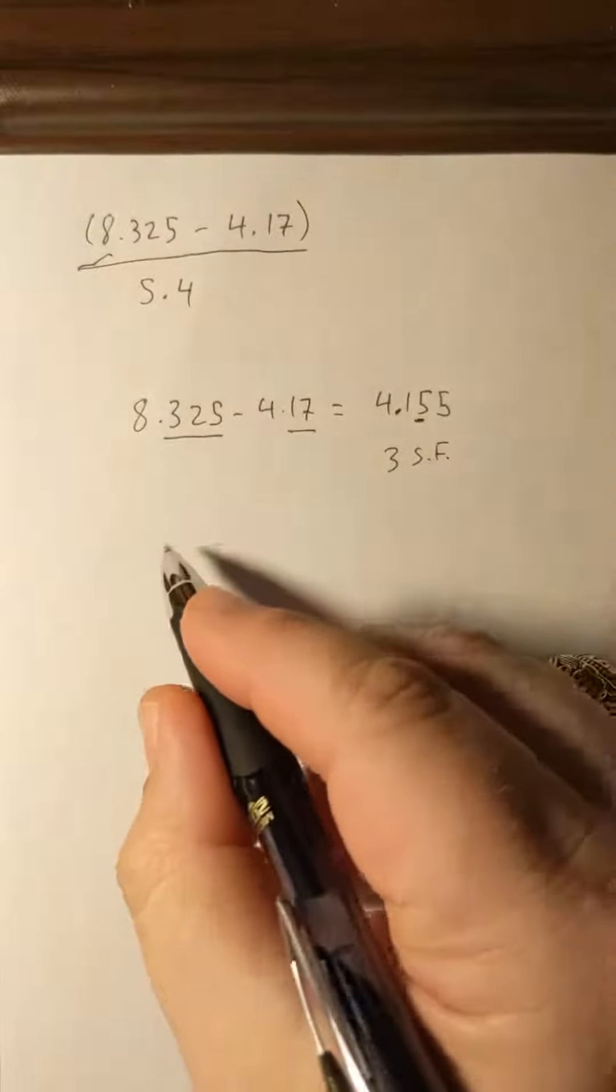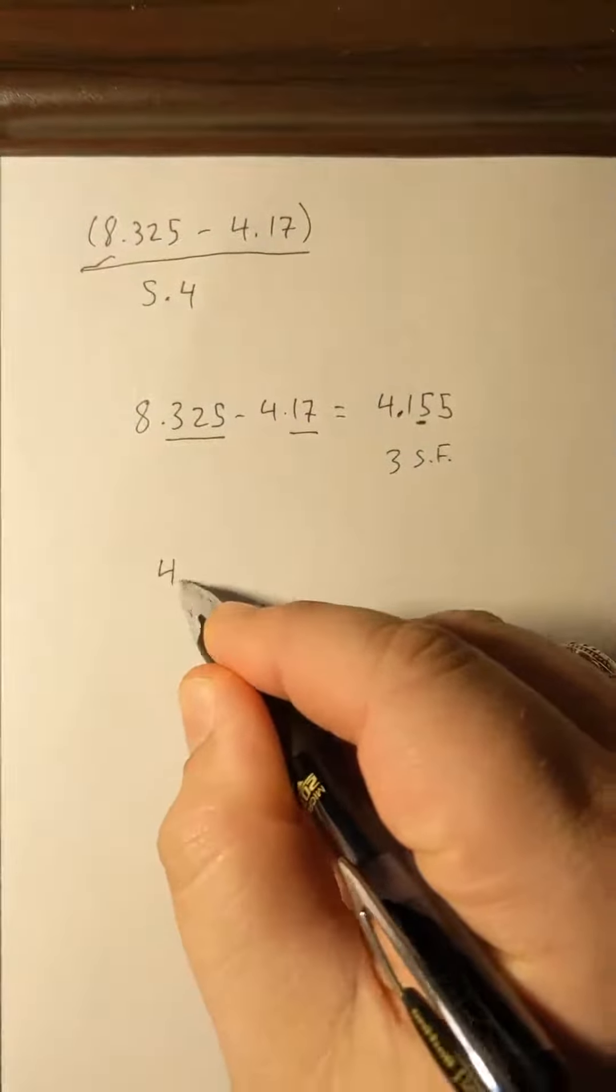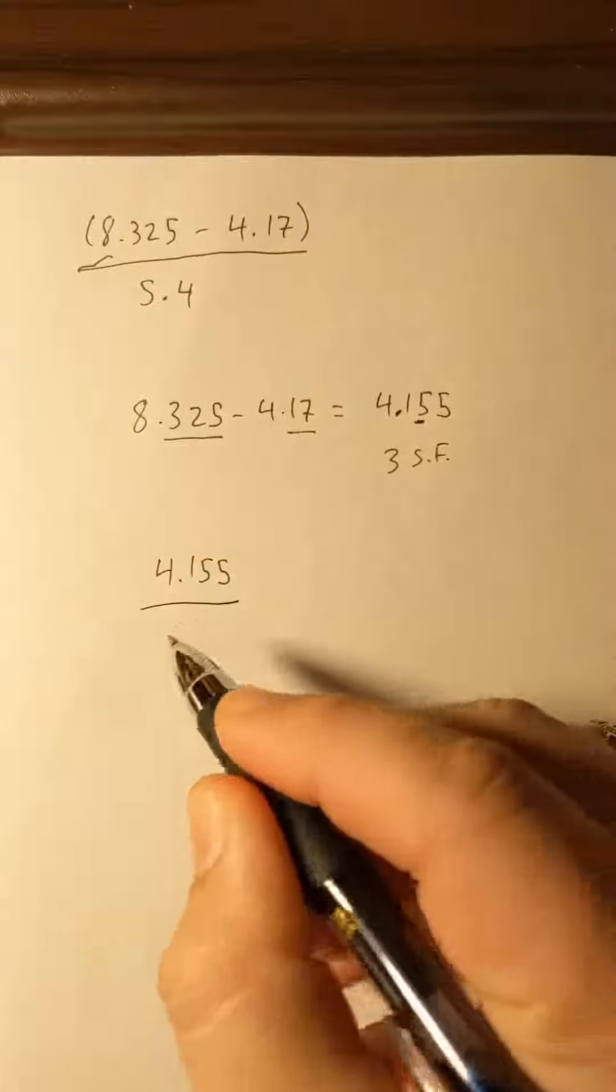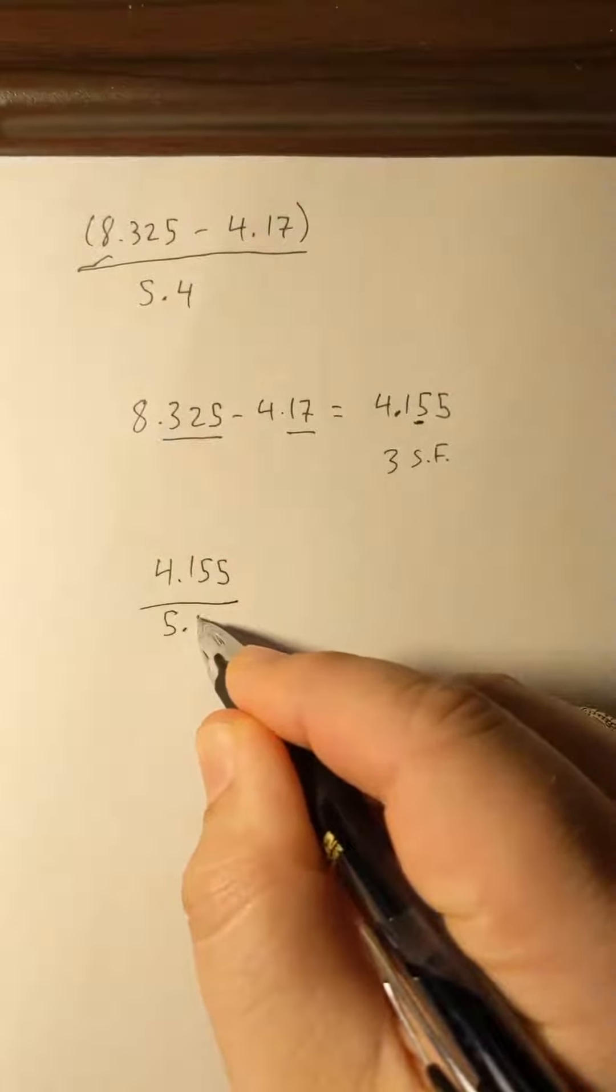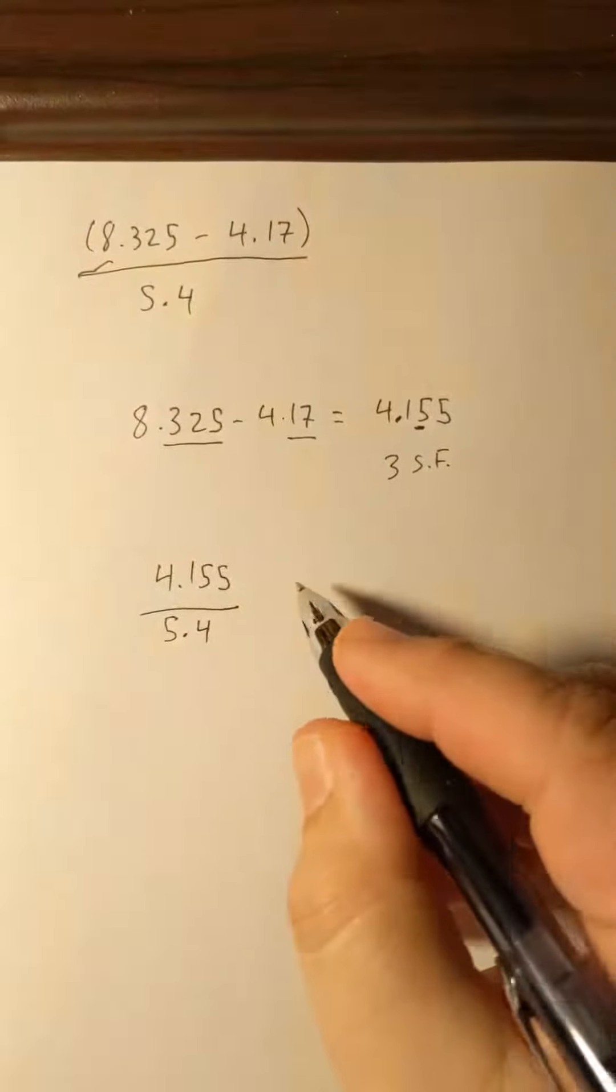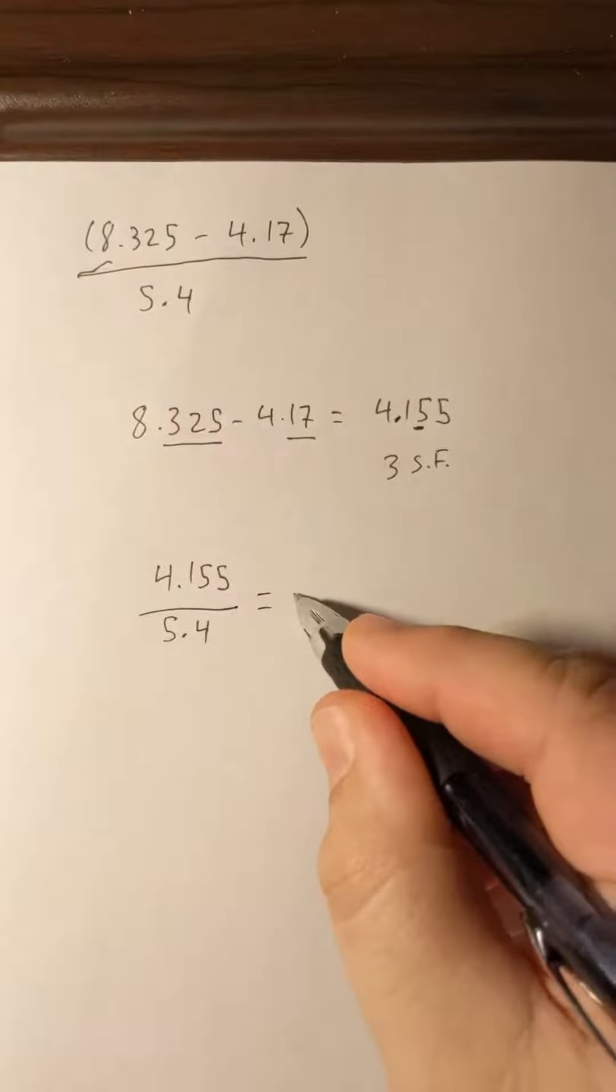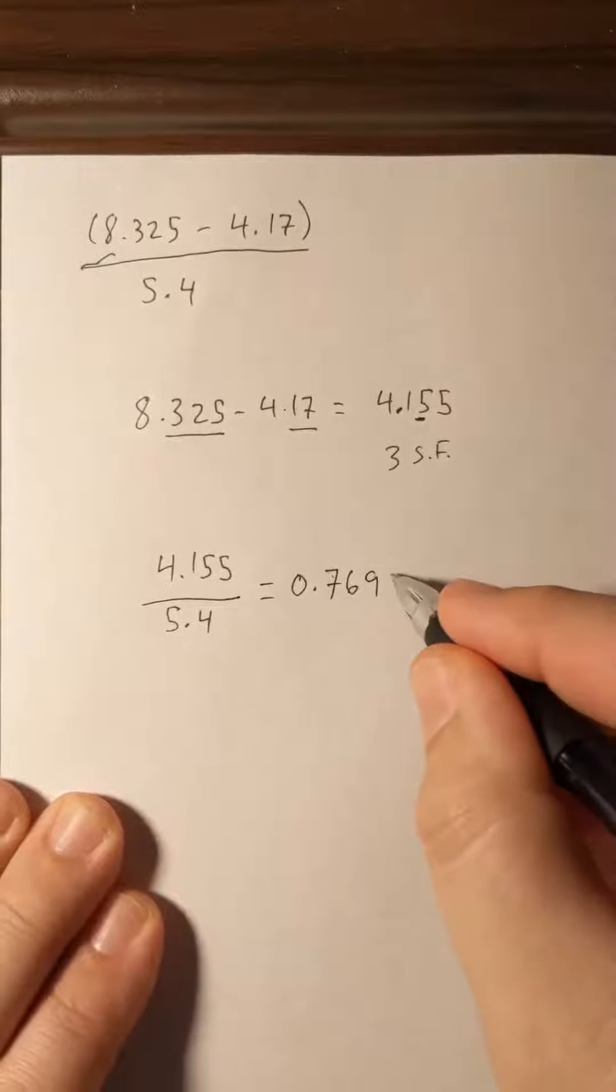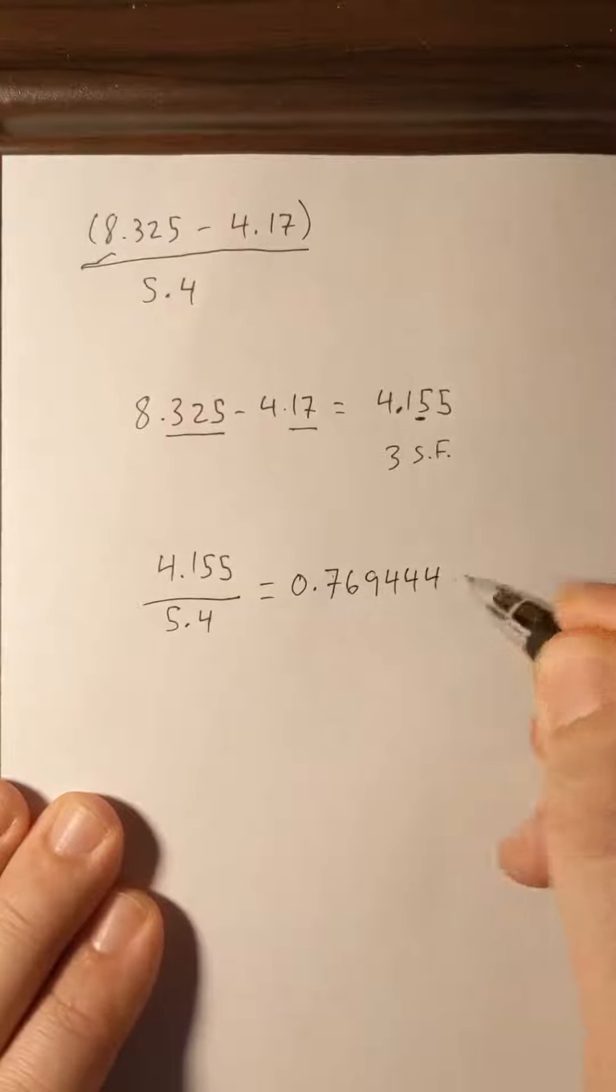Now we have to handle the division, so we'll still use the entire 4.155 over 5.4. That division problem will give us 0.769444.